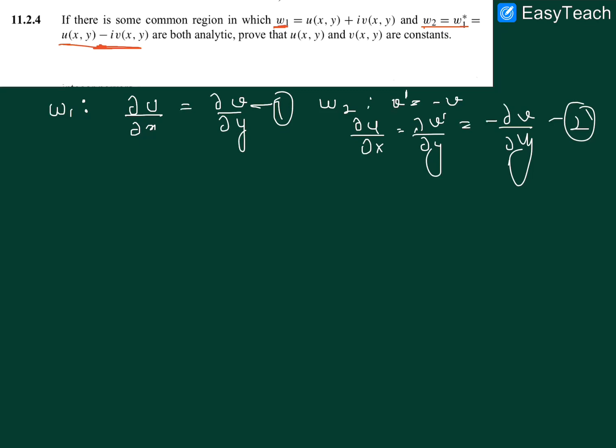2 into du by dx is equal to 0, which implies du by dx is equal to 0. That gives us u is a function of y. This is equation 3. Now we have only used the first Cauchy-Riemann condition.